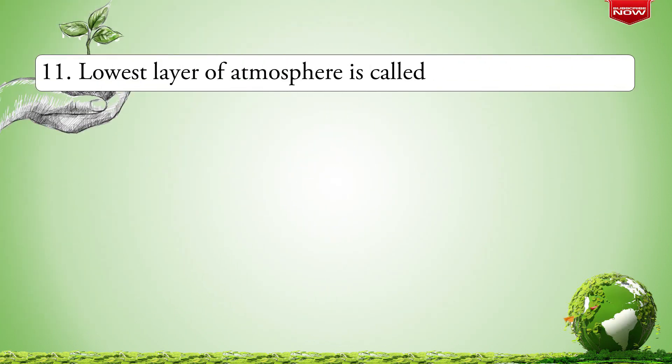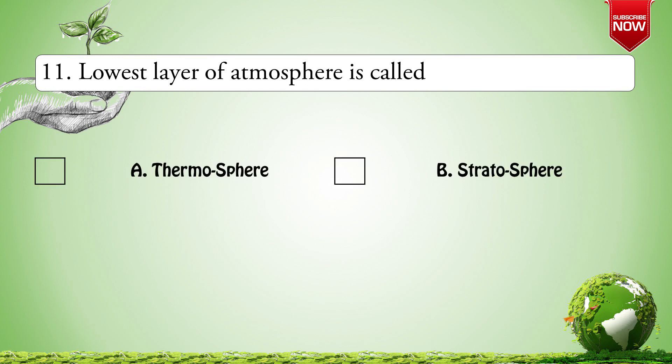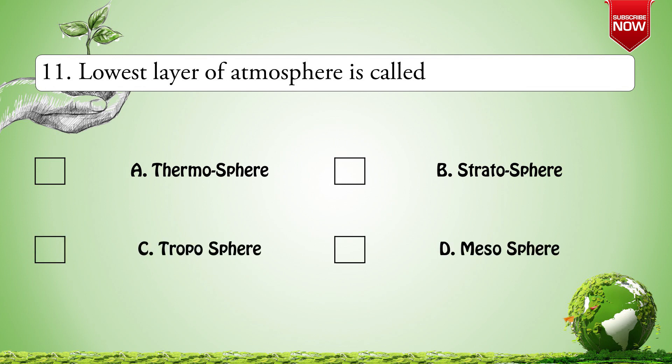Next question: The lowest layer of the atmosphere is called — Options are: A. Thermosphere; B. Stratosphere; C. Troposphere; D. Mesosphere. This is a very easy question. The correct option is C: Troposphere.